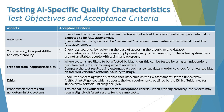The next quality characteristic is transparency, interpretability, and explainability. Acceptance criteria here include: check transparency by reviewing the ease of accessing the algorithm and dataset; check interpretability and explainability by questioning system users, or, if actual system users are not available, people with a similar background can be used. Essentially, measure transparency as access to information, and interpretability and explainability from whether users can understand what the AI system is trying to convey as output.